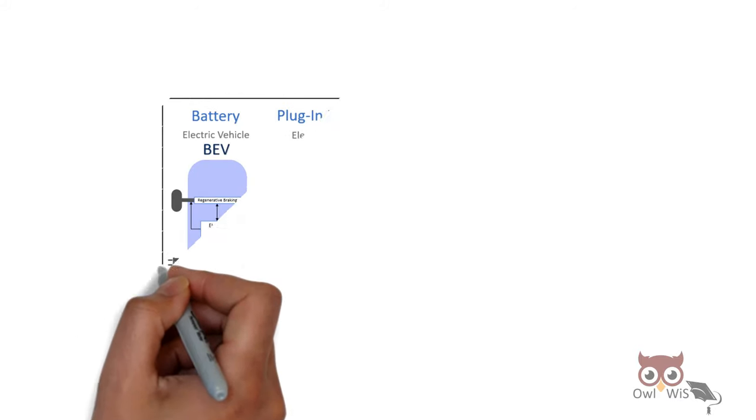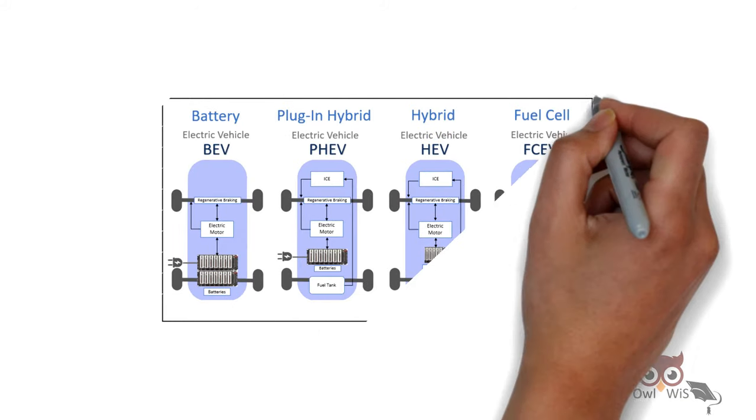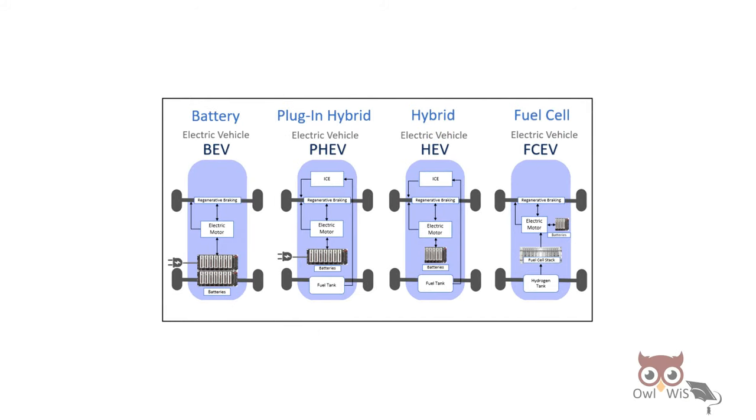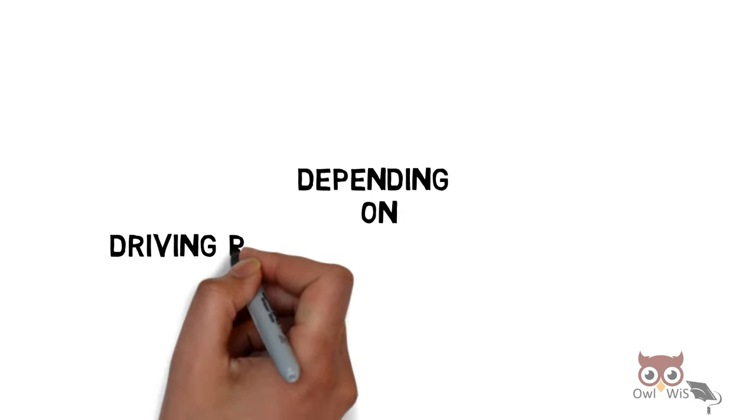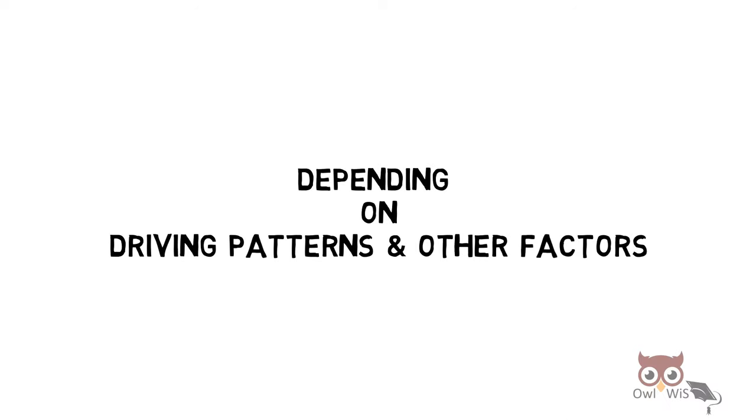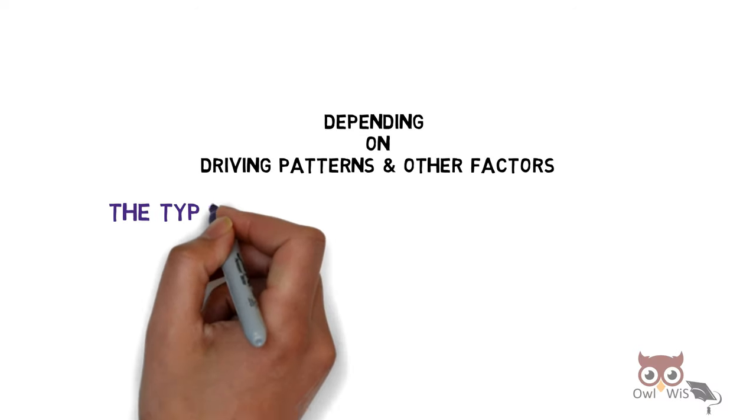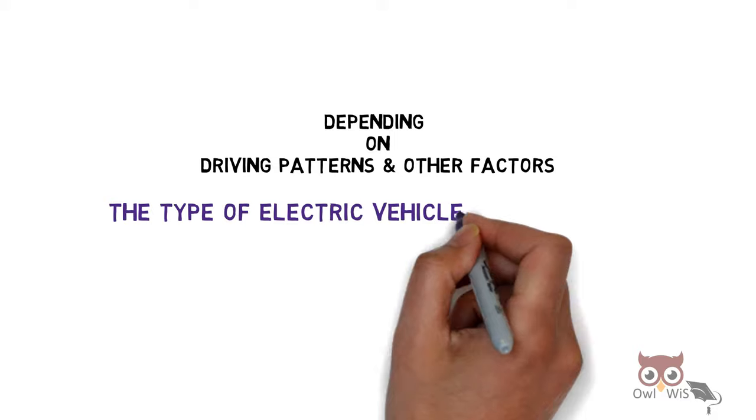Here is an overview of types of electric vehicles. BEV and PHEV can be recharged from the electricity grid, but HEV and FCEV do not have a charge port. Also, PHEV and HEV have internal combustion engines to power vehicles along with motors. Depending on the driving pattern and other factors, the type of electric vehicle can be chosen.